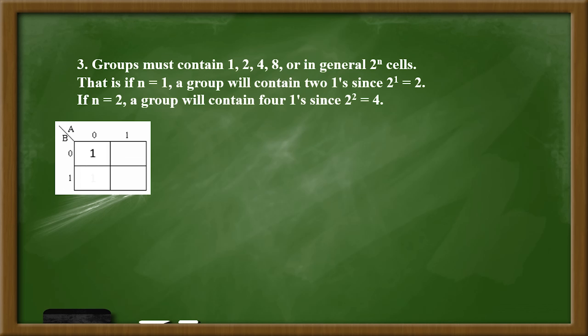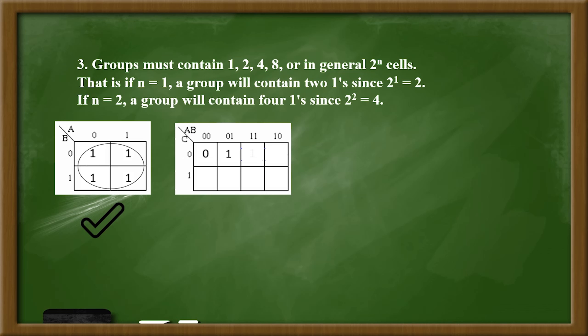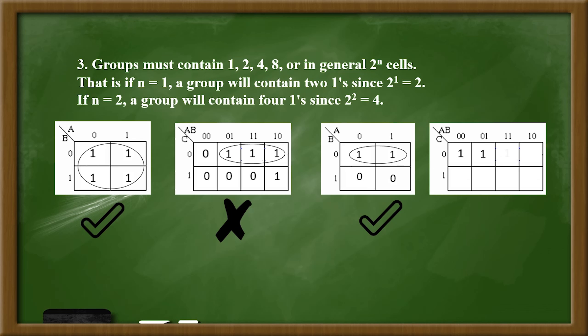Groups may contain power of two number of cells. As we can see, the second one is wrong because it has three cells in the group, and the final one is wrong because it has zero.